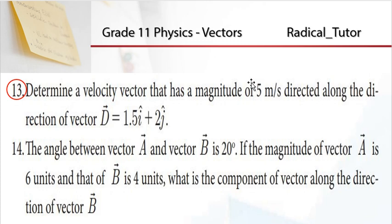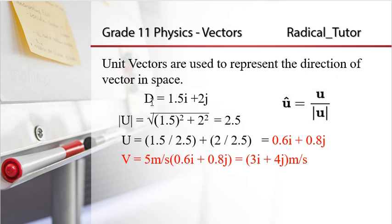So this velocity vector has magnitude 5 m per second. We need the unit vector along the direction of the given vector. We have the given vector d = 1.5i plus 2j. We can find the unit vector along vector d.